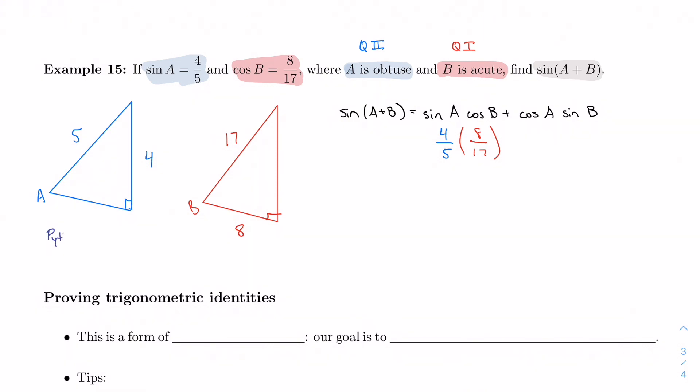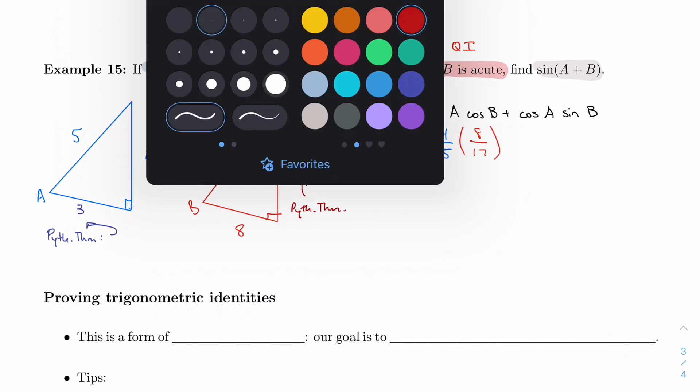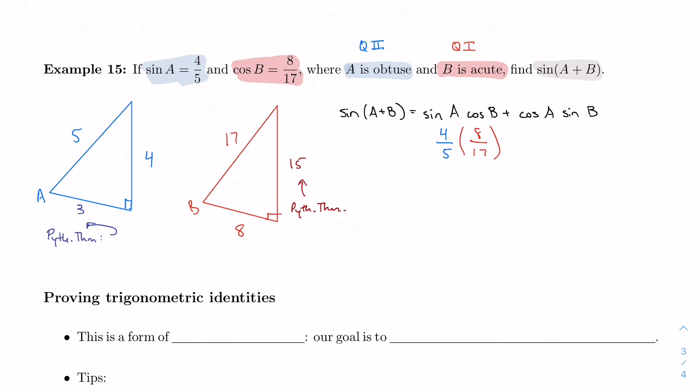So by the Pythagorean theorem, this missing side is 3. And then by the Pythagorean theorem, this missing side in the red triangle is going to be 15. Again, that's by the Pythagorean theorem. And now we have our information. So we know that cosine of A is 3/5. And we know that sine of B is 15 over 17.